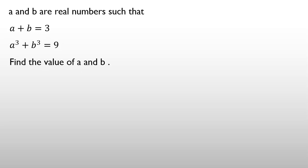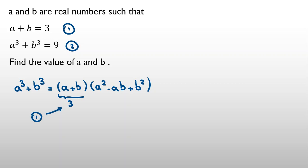For solving this, you should know this identity: a cubed plus b cubed equals (a plus b) times (a squared minus ab plus b squared). If I consider the first equation and second equation, a plus b equals 3 by the first equation.